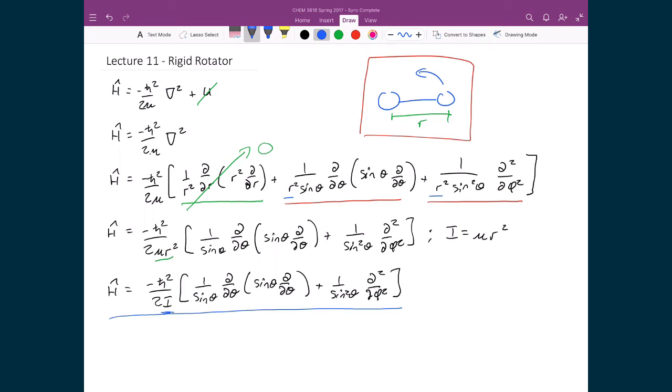This means that when we write the Schrödinger equation we can write a system where we would say the Hamiltonian is operating on some function of θ and φ, and what should be returned is that function of θ and φ times the energy. In this case we're not going to use ψ to denote the wave function solutions of the system. Instead we'll use an uppercase Y, which is the typical nomenclature for this problem. However, we're going to treat it the same as ψ, where we can write this eigenvalue-eigenvector relationship with the Hamiltonian.